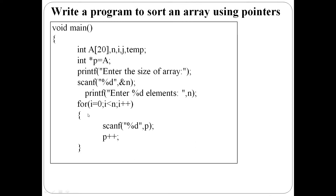Write a program to sort an array using pointers. Here, a is an array of maximum capacity 20. int star p equal to a — p points to the array starting location. Next, enter the size of the array — how many elements to enter. That will be read. Using a for loop with i equal to 0, i less than n, i plus plus — n times the for loop iterates. Elements are read one at a time using scan.